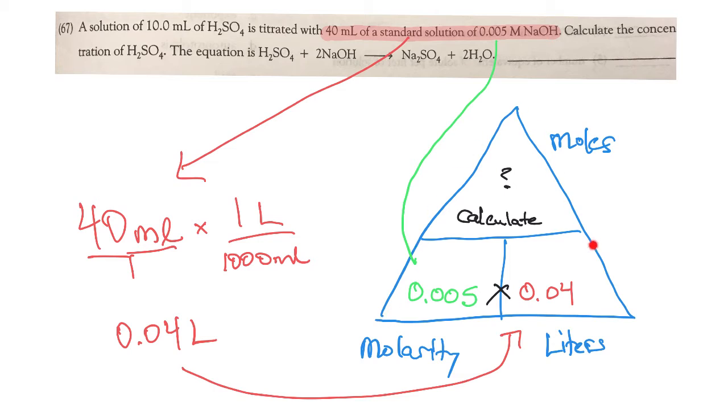Notice, remember the magic triangle? We've talked about this before. If I put the liters here in the bottom, the problem gives us the molarity, 0.005. So we'll put that in right here, and they're side by side. So we can calculate the number of moles by just multiplying these two together. So get your calculator out right now.